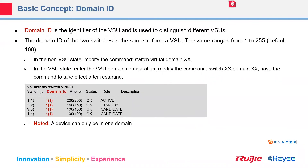The domain ID is the identifier of the VSU and distinguishes different VSUs. If multiple switches are in the same VSU unit, the domain ID should be the same. Different VSU units have different domain IDs. Within the same domain ID, switch IDs should be different.